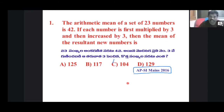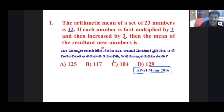Now, poll question: The arithmetic mean of a set of 23 numbers is 42. If each number is multiplied by 3 and then increased by 3, what is the mean of the resulting new numbers? The options are 129, 123, and 141.